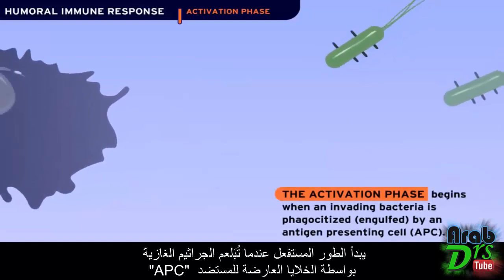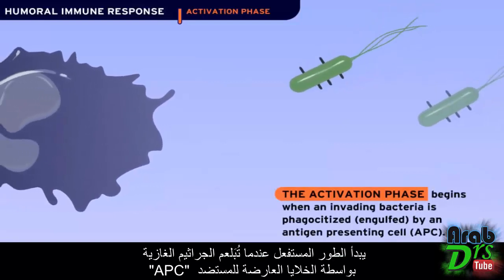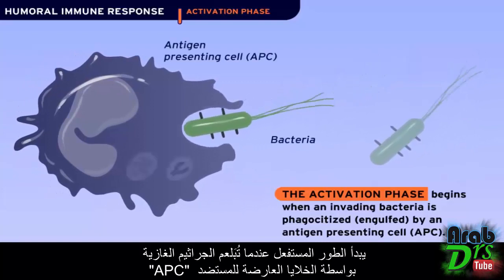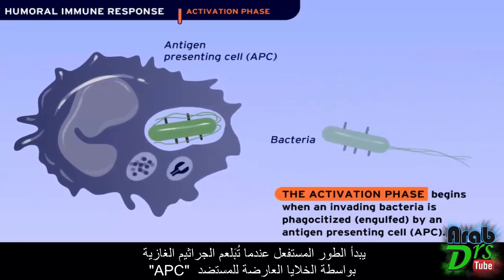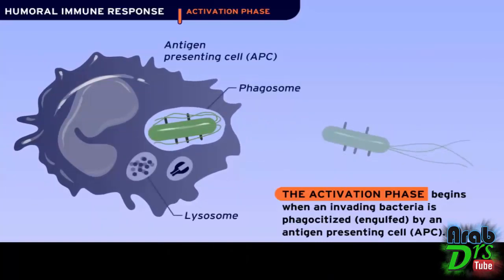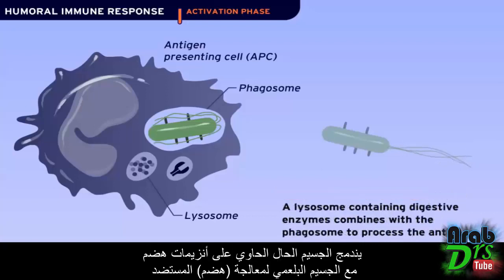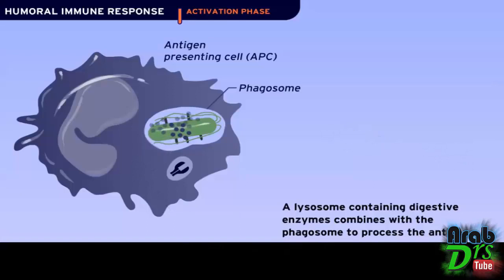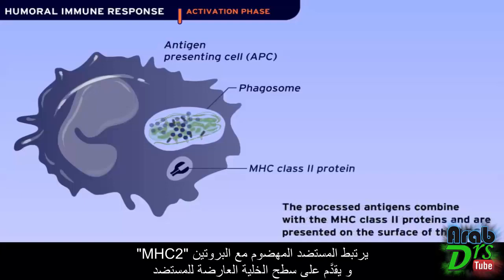The activation phase begins when an invading bacteria is phagocytized, engulfed, by an antigen-presenting cell, APC. A lysosome containing digestive enzymes combines with the phagosome to process the antigens. The processed antigens combine with the MHC class 2 proteins and are presented on the surface of the APC.